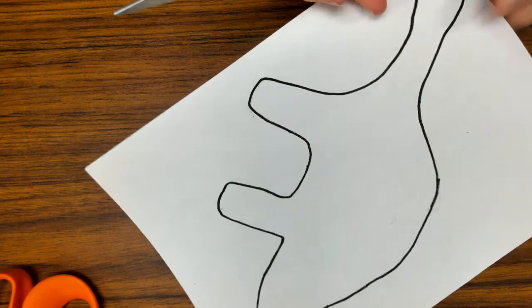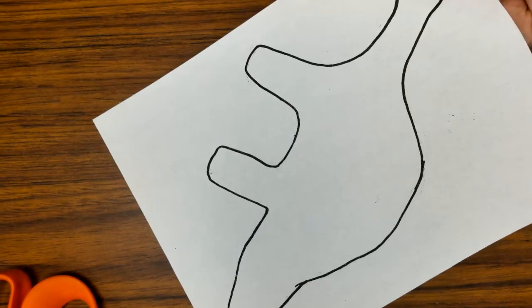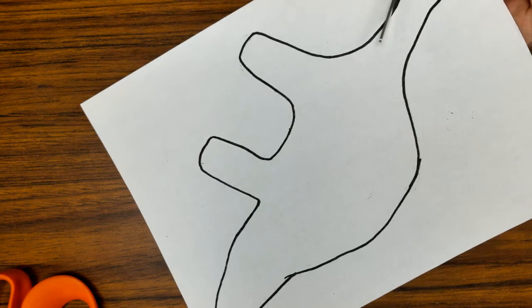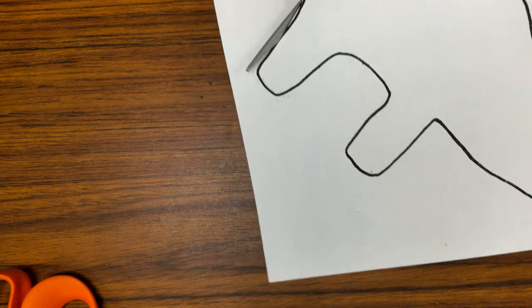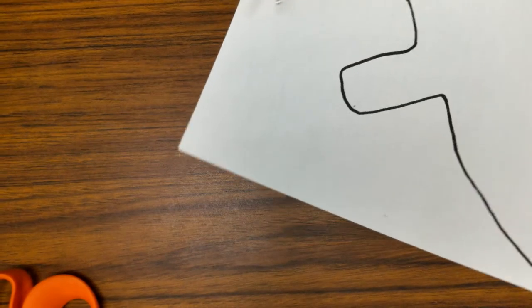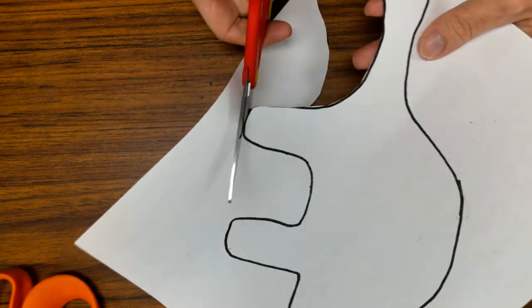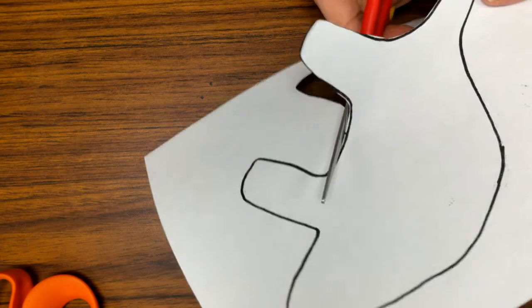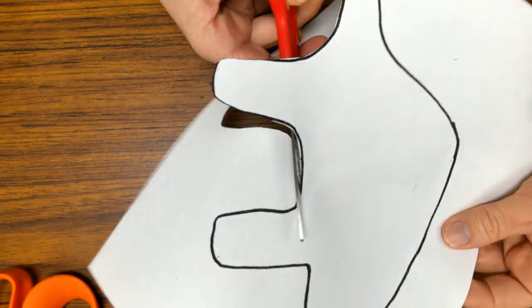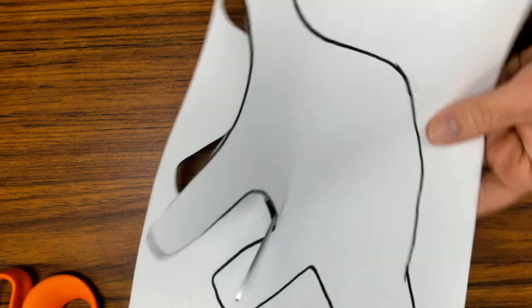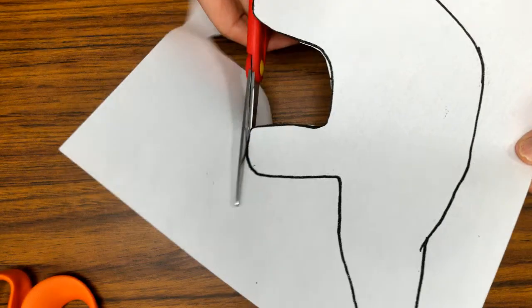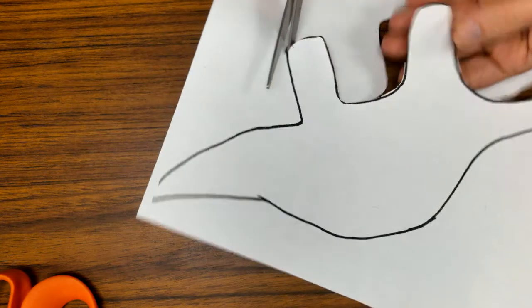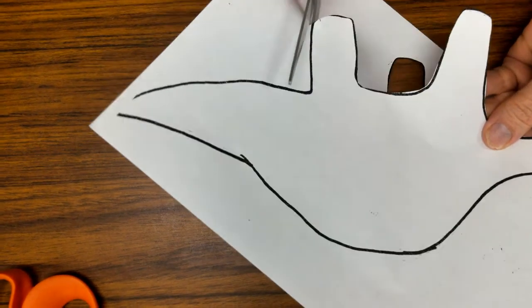I need to cut out my dinosaur pattern on the solid black line. So I'm just going to go around with my paper scissors and cut out on the solid black line. It doesn't have to be perfect, right? No stress. A little bit under the line, that's fine. But I've got to first cut out this pattern.